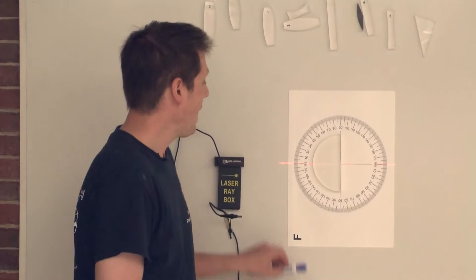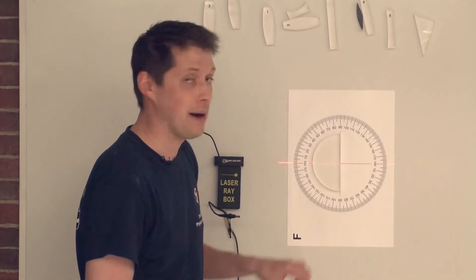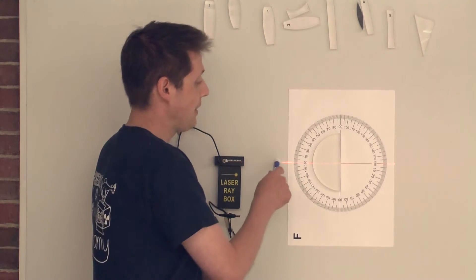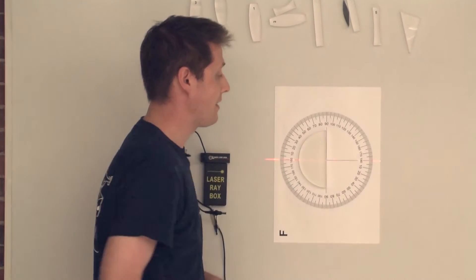Snell's Law is a law that helps us describe what happens to a ray of light as it hits a boundary. Now this ray of light that we have is going to first go through plastic, and then the boundary is this plastic-air interface, and then it goes onto air.